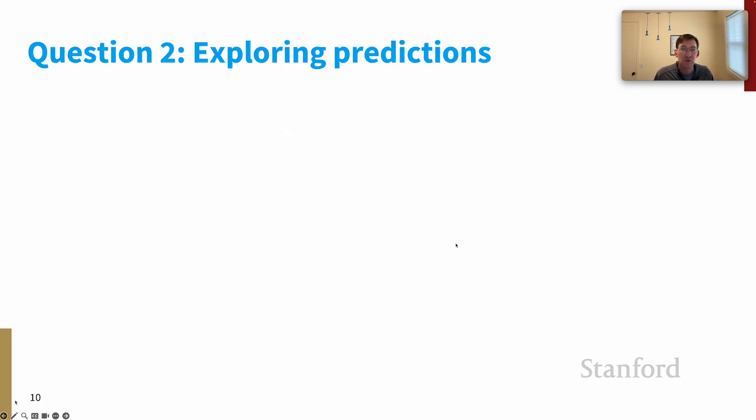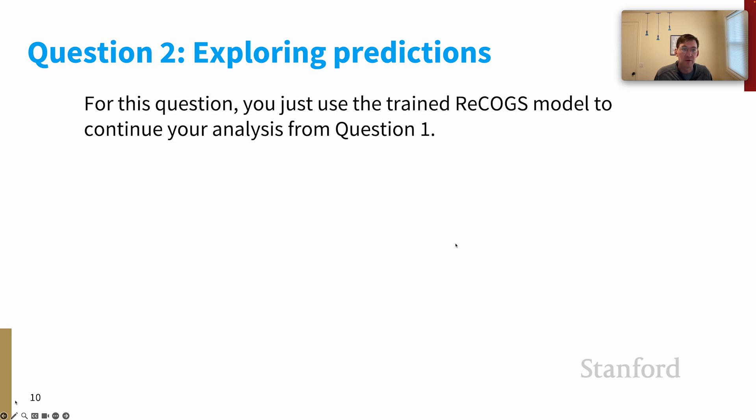Having made it through the interlude, we now get to question two, which is exploring predictions of the model. For this question, you just use Zen's trained ReCOGS model out of the box. And what you're doing is continuing the data analysis that you began in question one.